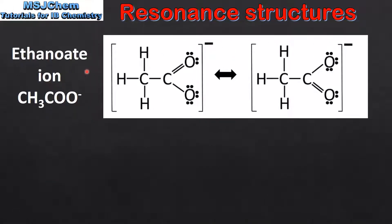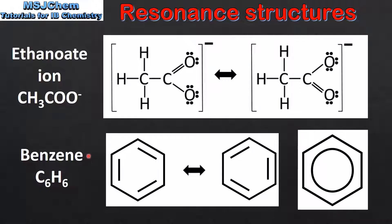The next example is the ethanoate ion. The ethanoate ion has two possible Lewis structures in which the carbon to oxygen double bond is in a different position. The last example is benzene. The Kekulé structure of benzene has alternating single and double bonds, and this gives rise to two possible Lewis structures.